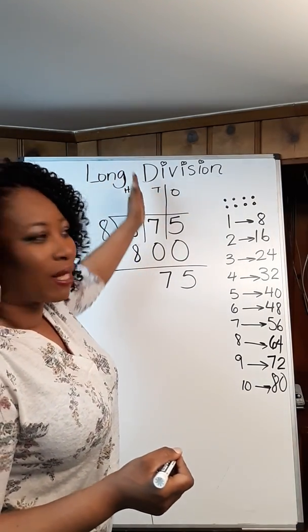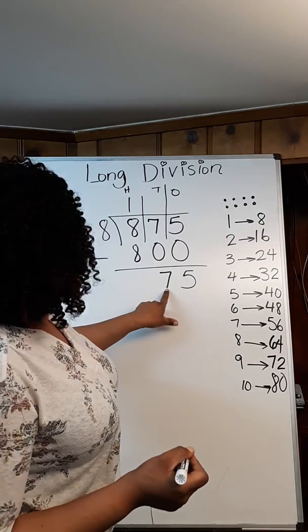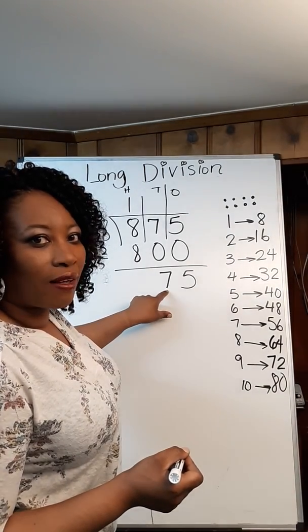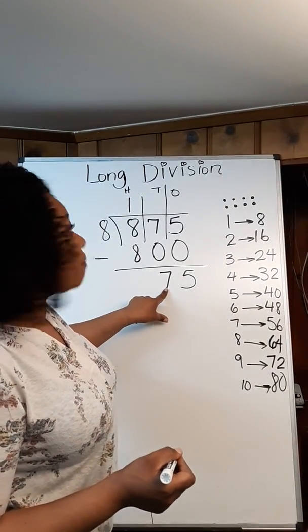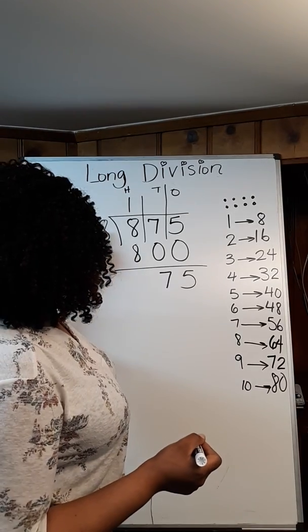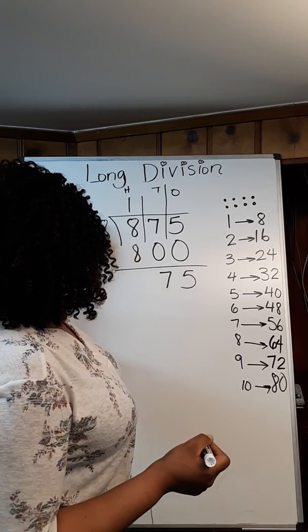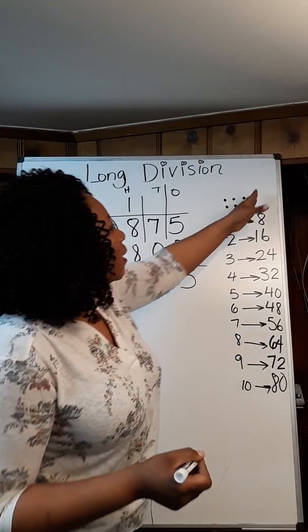Now we're going to go to the tens place. We're only going to look at this digit only, just the seven. How many times does eight go into seven? How many groups of 8 can I get out of seven? I can't because I only have seven.